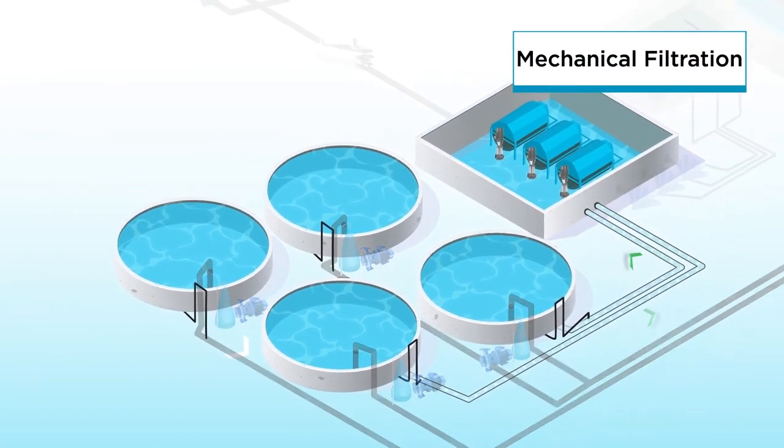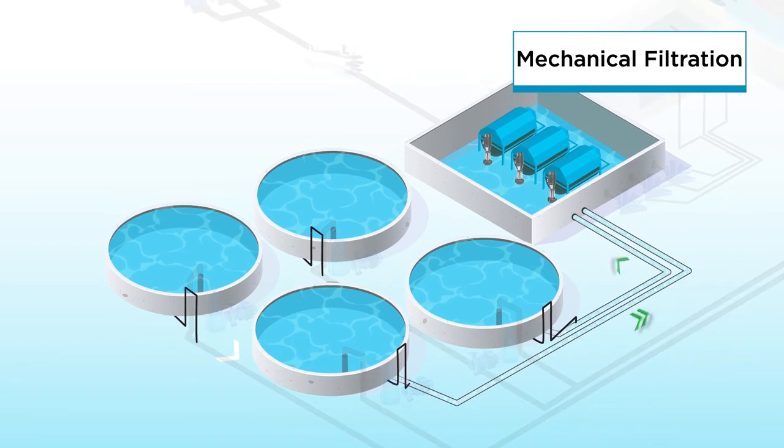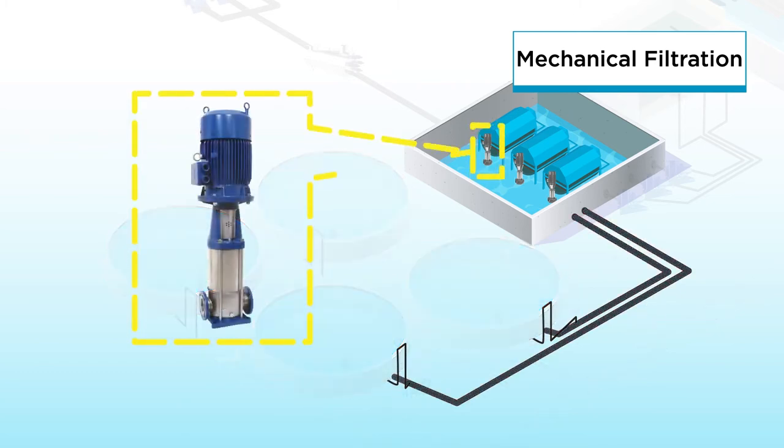Afterwards, the water goes through the mechanical filtration after completing one cycle in the recirculating aquaculture system. At this stage, the DESMI multi-stage pumps provide high pressure to support the flushing of the mechanical filtration process.